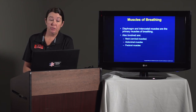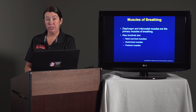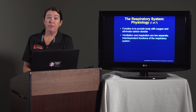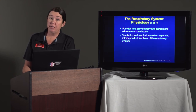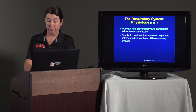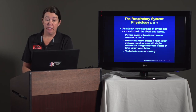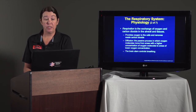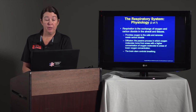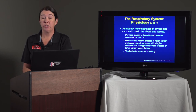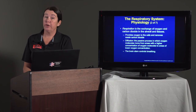Also involved in breathing are your neck muscles, abdominal muscles, and pectoral muscles, especially when patients are under distress or having trouble breathing. The function of the respiratory system is to provide the body with oxygen and eliminate waste, which is carbon dioxide. Ventilation and respiration are two interdependent functions of the respiratory system. Respiration is the exchange of oxygen and carbon dioxide in the alveoli and the tissues of the body, providing oxygen to the cells and removing the waste carbon dioxide. The term diffusion is the process in which oxygen molecules move from areas of higher concentration to areas of lower concentration.